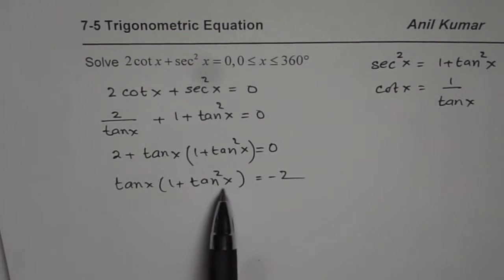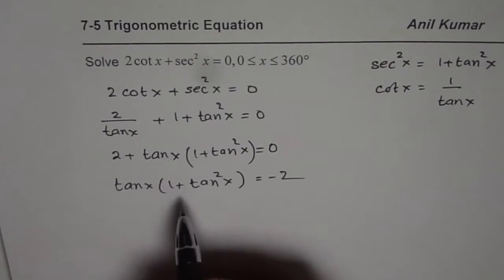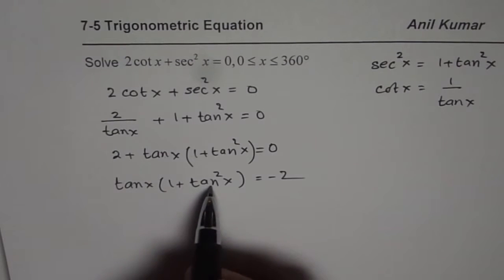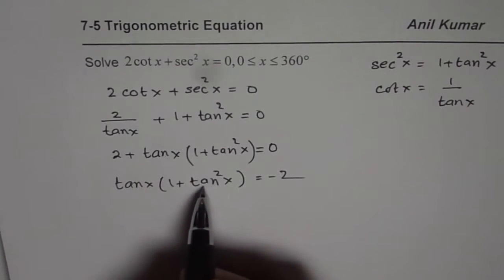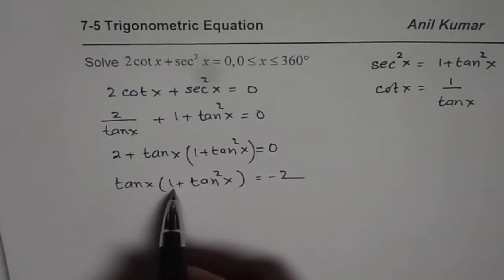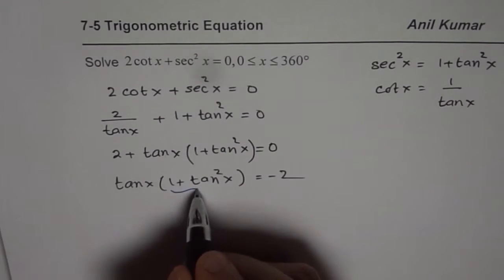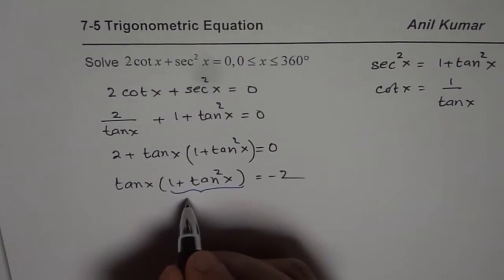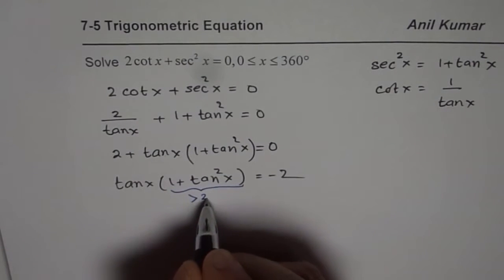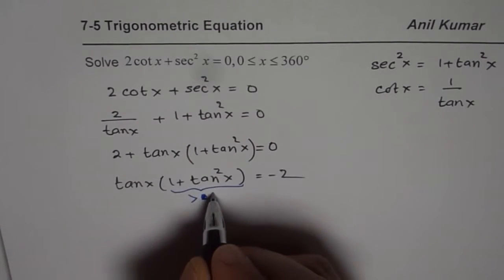Now if you analyze this situation then what do we figure out? 1 plus tan square x. You know tan square x is always positive square, so it is positive. So this value 1 plus tan square x is greater than 2, I mean greater than 1.